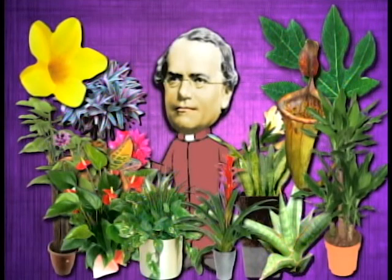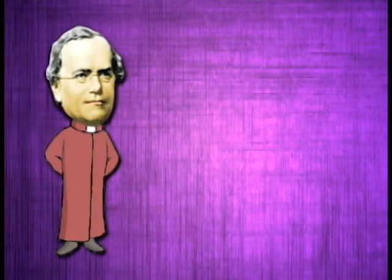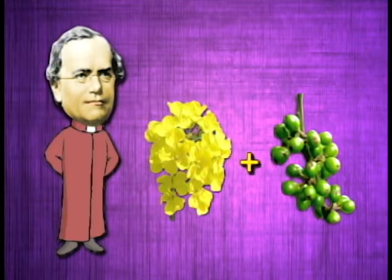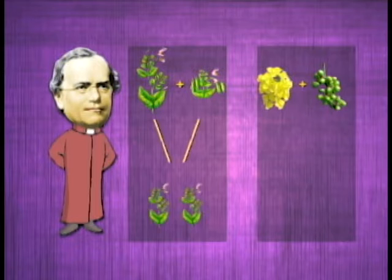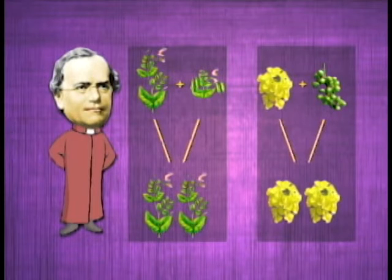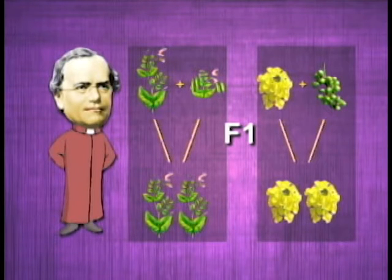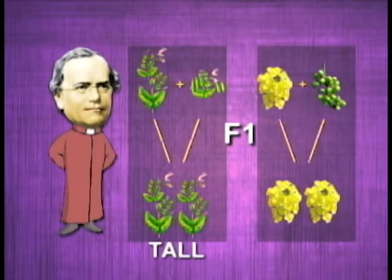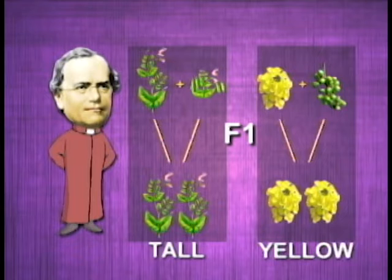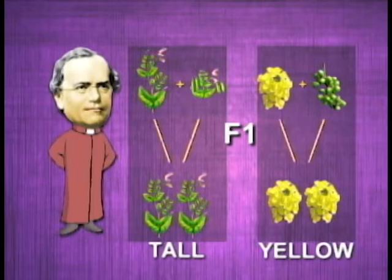It was from this quantitative data that Mendel deduced the principles governing inheritance. Mendel was able to produce hybrid offsprings for several contrasting traits by cross-pollination. For example, he crossed a tall garden pea with a short one, and a yellow-seeded plant with a green-seeded plant. In each case, he observed that the resulting first-generation hybrids, denoted by the symbol F1, showed traits of only one parent. All the F1 hybrids were tall, and all F1 hybrids for seed color were yellow. He called those traits that appeared in the first generation as dominant, and the traits that did not appear as recessive.